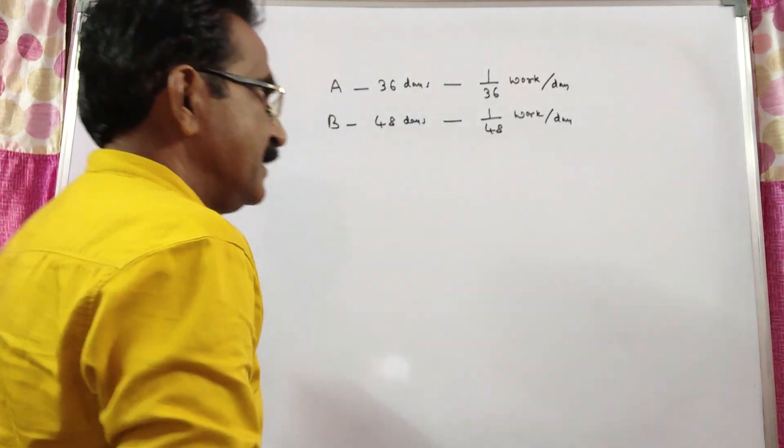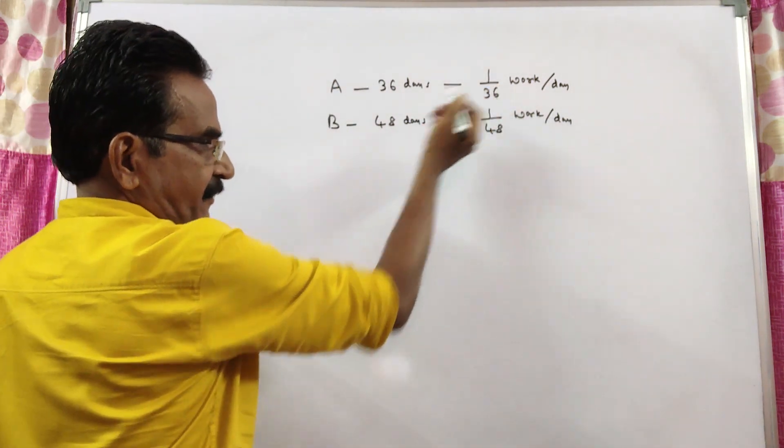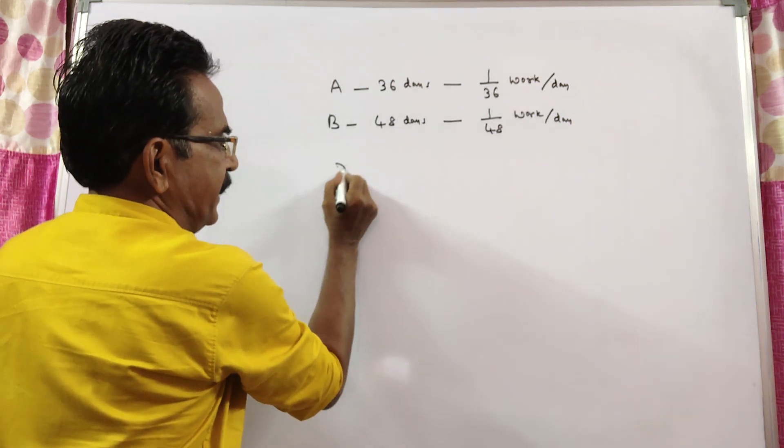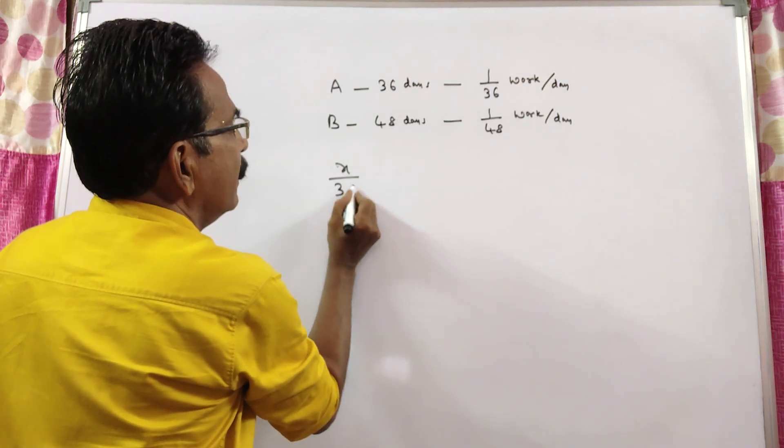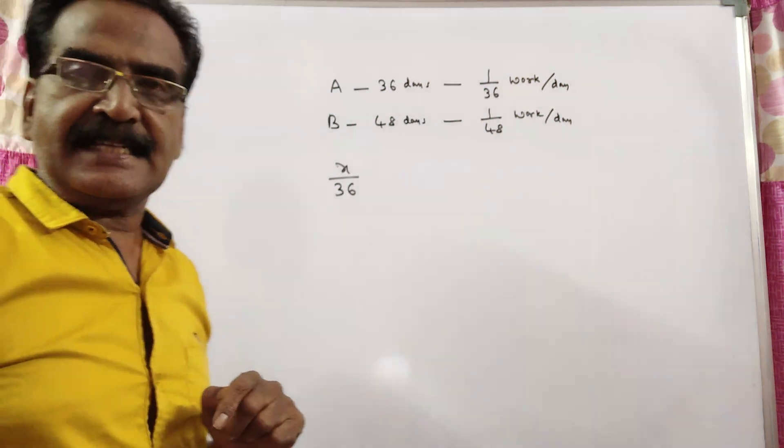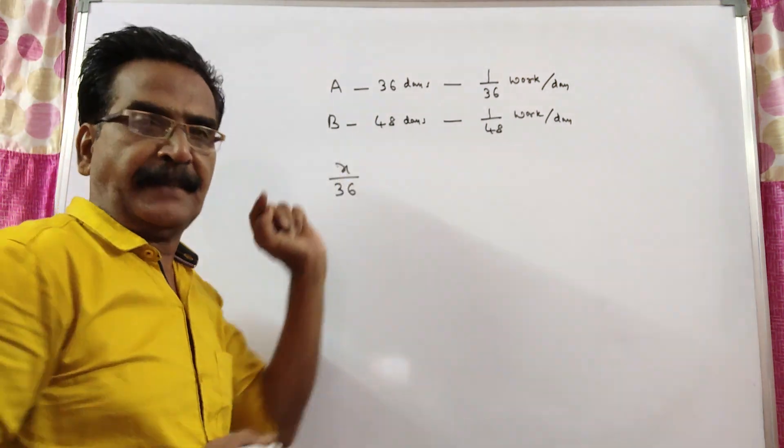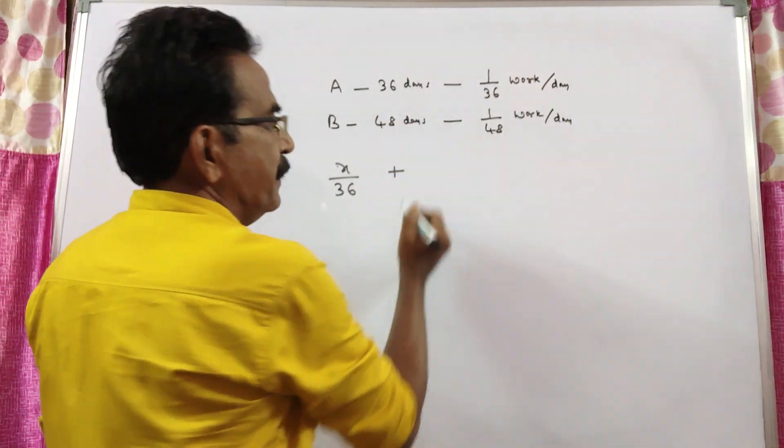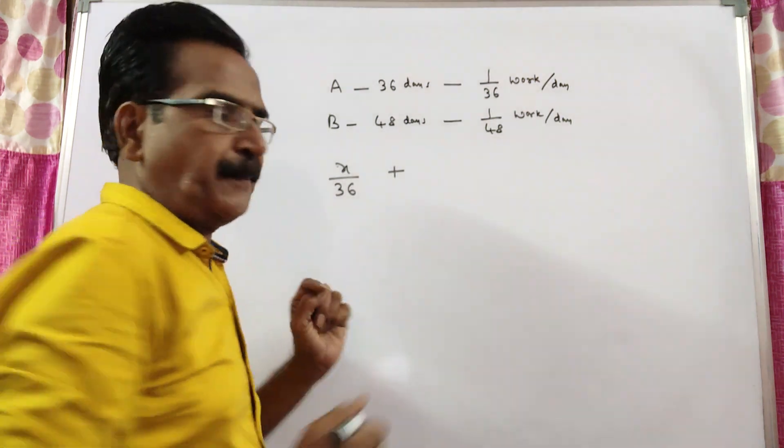See friends, A worked for X days. So, the work done by A in X days is X by 36, X into 1 by 36. Plus B worked for X plus 2 days.